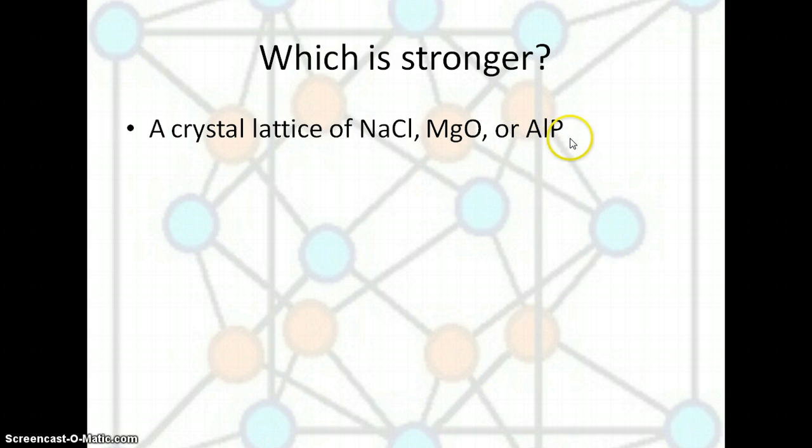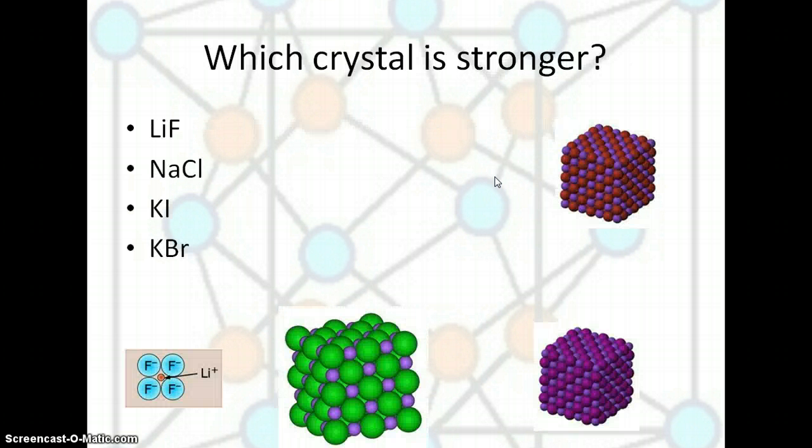The bigger the charges, the stronger the force of attraction. So, AlP would give us our strongest crystal lattice, because we have a 3 plus and a 3 minus ion. The bigger the charges, the stronger the attraction.